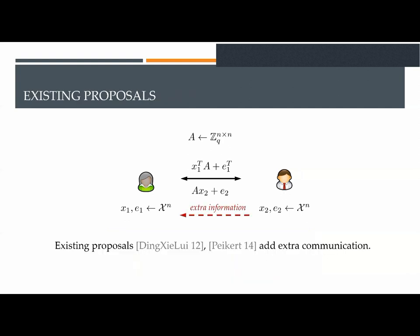The solution proposed by Ding et al. and Peikert, to make this approximate agreement equal to a regular key agreement, is to add a next round of communication. The question that we investigate is whether this round of interaction is inherent.